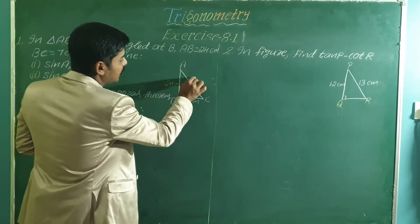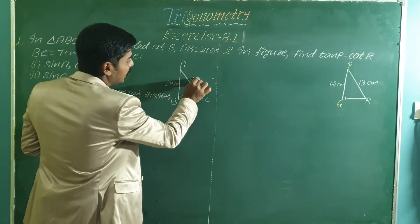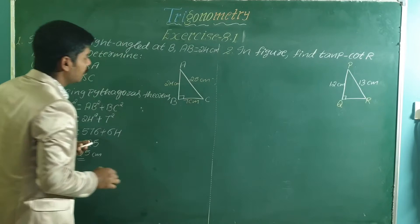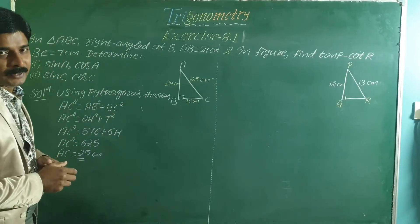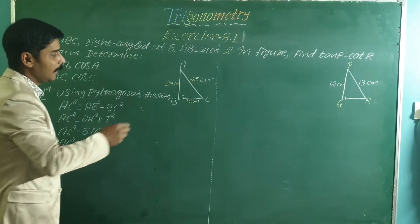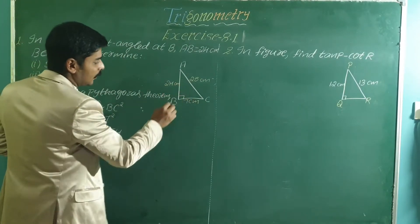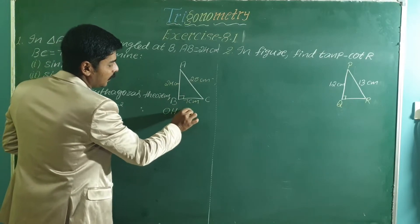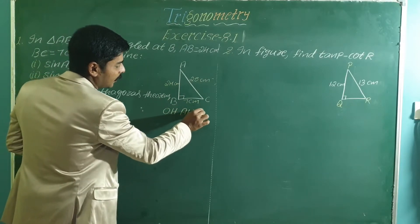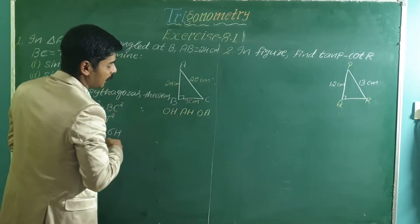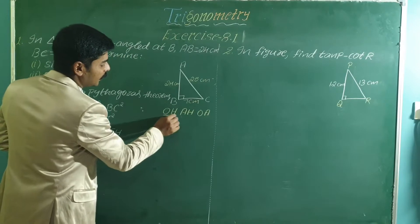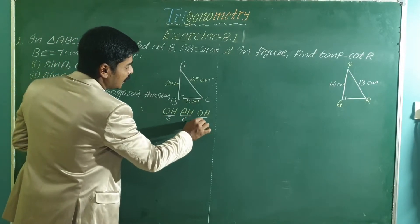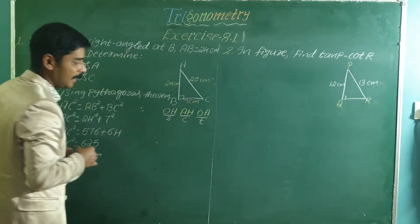Once you know all three sides of a right-angled triangle, you can find any trigonometric ratio. You must remember: sin is opposite over hypotenuse, cos is adjacent over hypotenuse, and tan is opposite over adjacent.